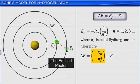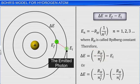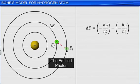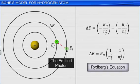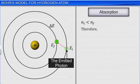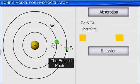And E initial by minus RH divided by n initial square to get an equation similar to the expression divided by Rydberg. Note that in case of absorption of energy, delta E is positive, and in case of emission, delta E is negative.